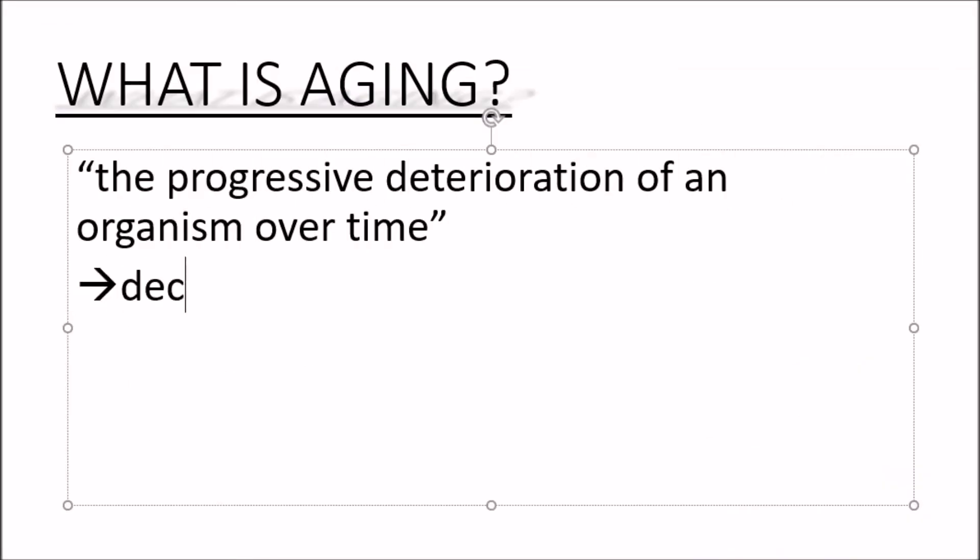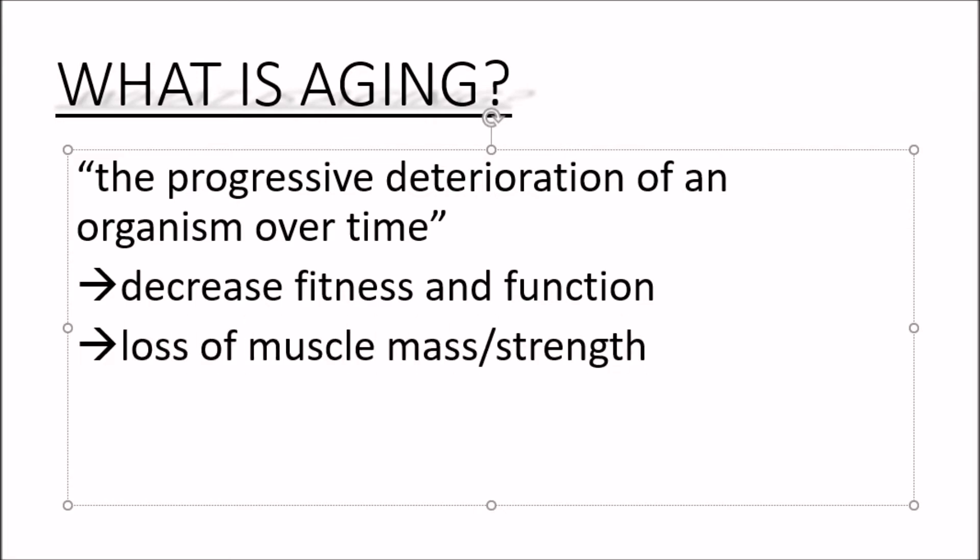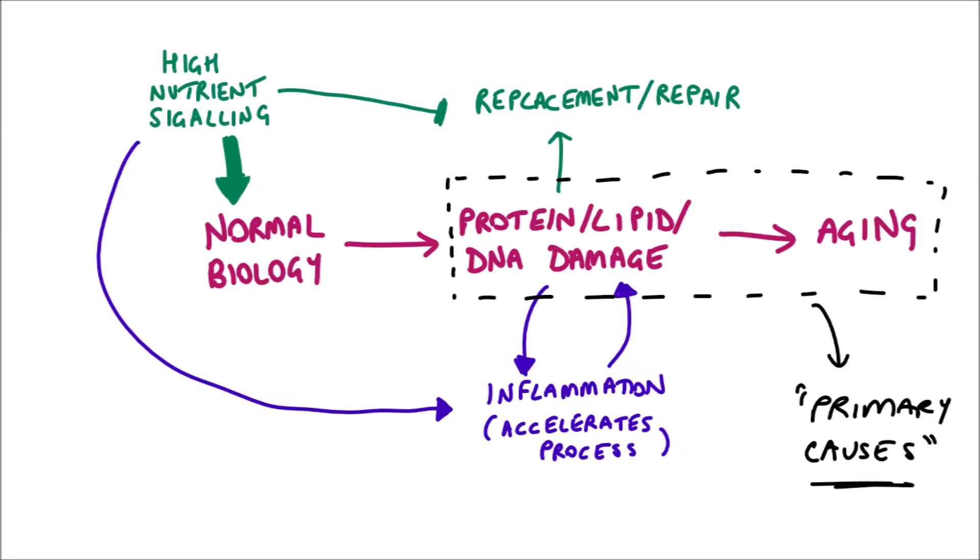What is aging? Well, one definition is that it is the progressive deterioration of an organism over time. The problem is aging is complex and takes a long time to study. A lifetime in fact.